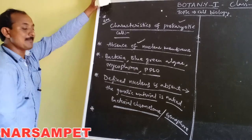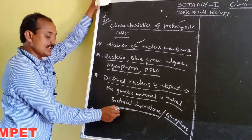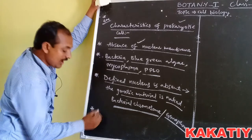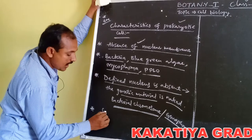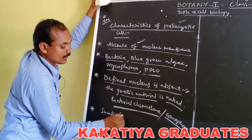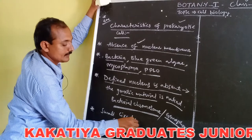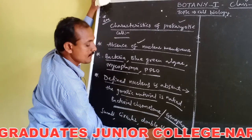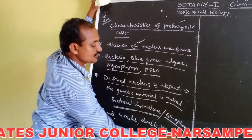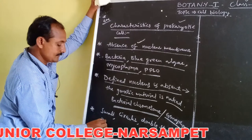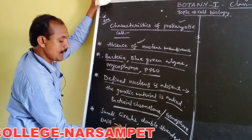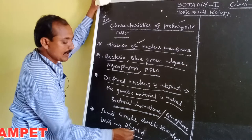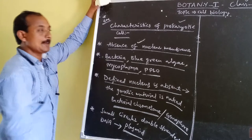Along with the main genetic material, bacterium cells also contain a small circular double-stranded DNA. It is called a plasmid. The plasmid is the extra genomic material present in the bacterium cell.